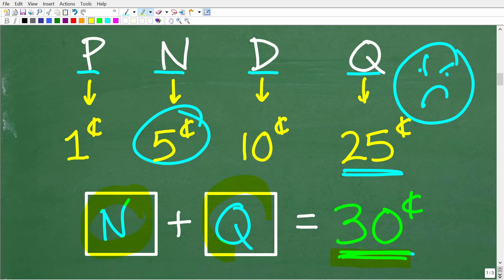One's not a nickel because it has to be a quarter. So a nickel plus a quarter is equal to 30 cents.